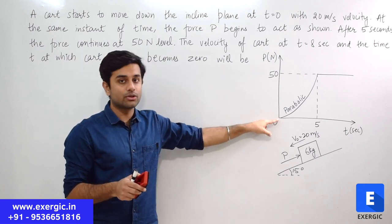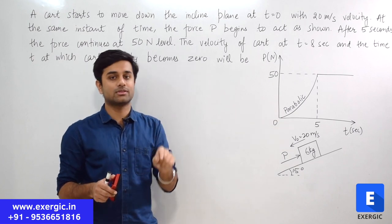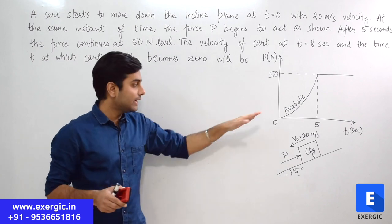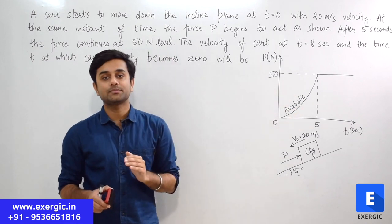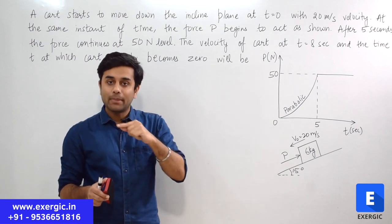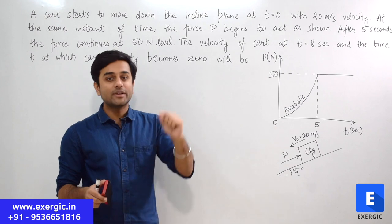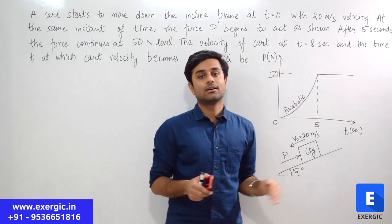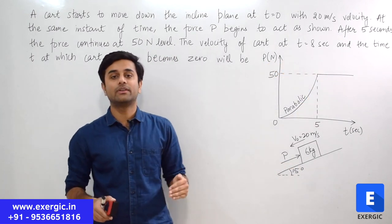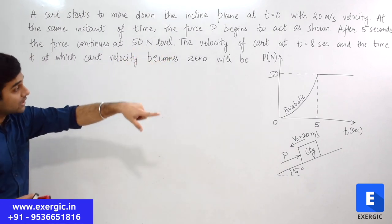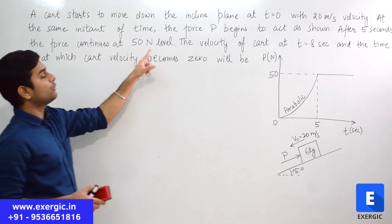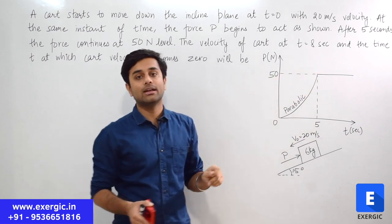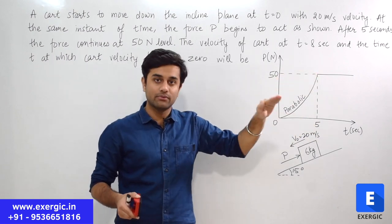You can see that at t equal to 0, force P is also 0 — initially the force is 0 just at t equal to 0. As time proceeds, the value of P also keeps on increasing parabolically, in a parabolic manner. It increases up to the value of 50 Newton, and after that it becomes constant, maintaining the same level of 50 Newton. That is what the question is saying — after 5 seconds, it reaches 50 Newton level and after that it remains the same 50 Newton.